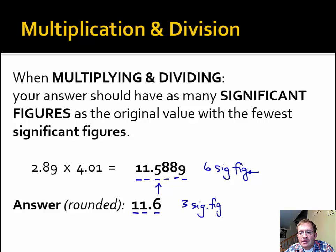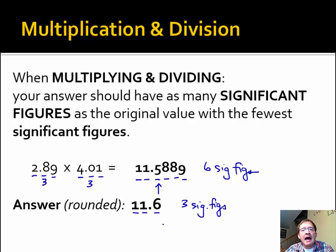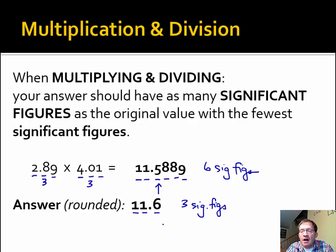To review the rule: your answer should have as many significant figures — in this case three — as the original value with the fewest. This had three, this had three, so our answer must also have three significant figures, and now it does. Any more than that and you've created more precision than you're allowed. You can't make a great quality answer out of poor quality measurements. We can't create more precision than we were given — three significant figures is the best we can do.